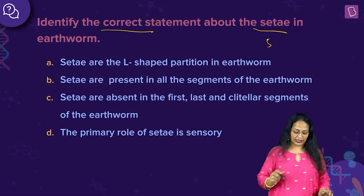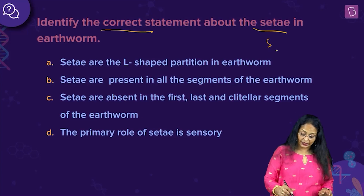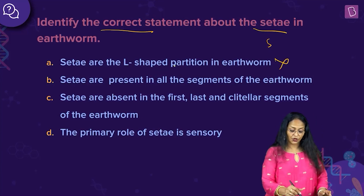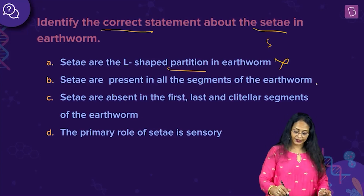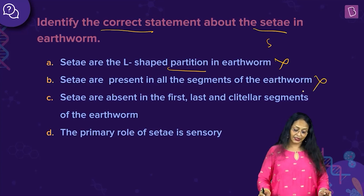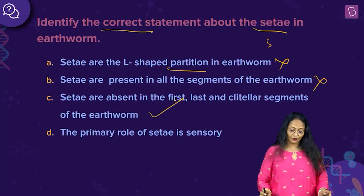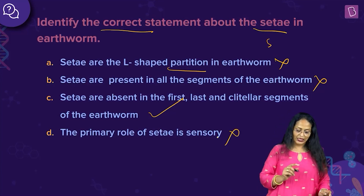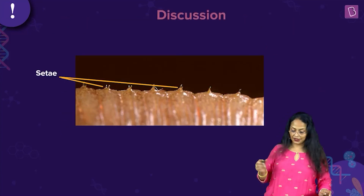Let's look at the options. Setae are L-shaped — no, it is S-shaped, so this is wrong. S-shaped partition — it's not a partition, this is wrong. Setae are present in all segments — no, it is not present in all segments, this is wrong. Setae are absent in the first, the last, and the clitular segments of the earthworm — this is correct. The primary role of setae is sensory — no, the primary role is locomotion, so this is also wrong. The right answer is C: setae are absent in the first, the last, and the clitular region.